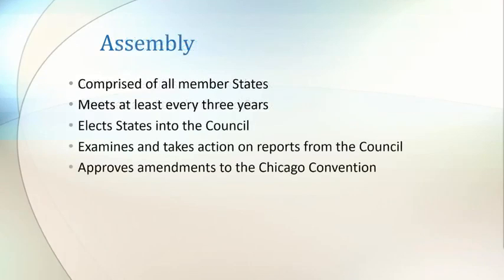ICAO has an assembly which is comprised of all member states. The assembly meets at least every three years, though can be called at any time if necessary. An assembly session can only take place if at least 20% of the member states are present. The assembly has a number of roles, including electing states into the council, reviewing and taking action on reports produced by the council, and approving amendments to the Chicago Convention.